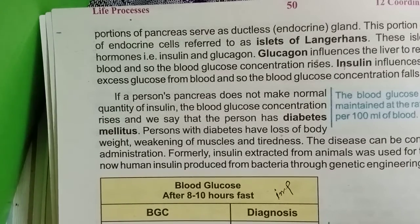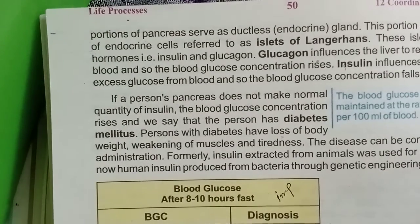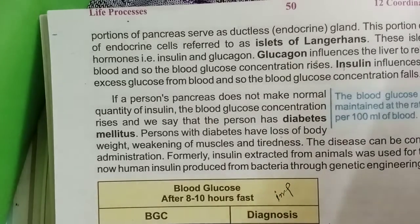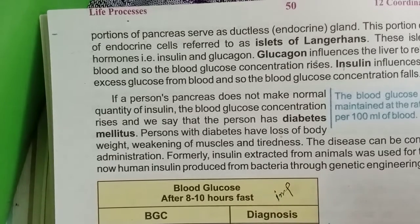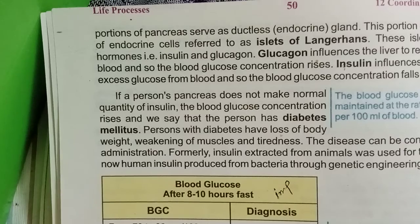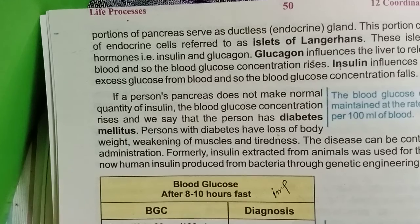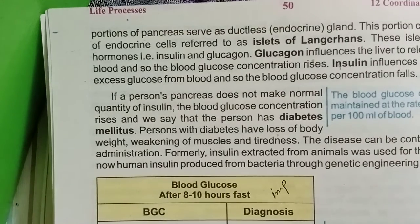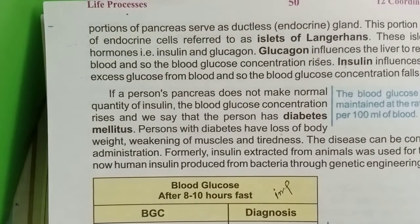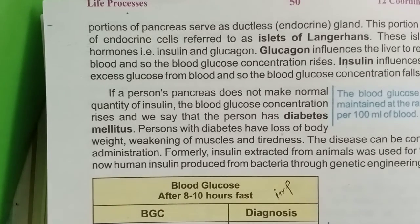Insulin must be maintained from outside the body to keep glucose levels balanced. People with diabetes are at high risk, and their bodies become weak. Those who have more serious problems start taking insulin injections and must maintain their diet, controlling it according to the doctor's prescription.